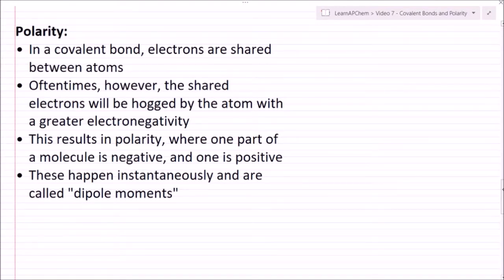All right, so let's talk about polarity now. In a covalent bond, electrons are shared between atoms as I've talked about, but oftentimes the shared electrons will be hogged by the atom with greater electronegativity. This results in polarity where one part of a molecule is negative and one is positive.